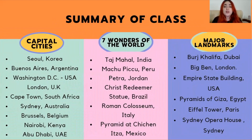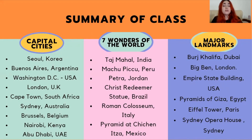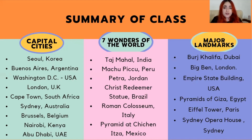Let's do a brief summary of today's lesson. First, we learned about capital cities: Seoul, Buenos Aires, Washington DC, London, Cape Town, Sydney, Brussels, Nairobi, and Abu Dhabi. Then we learned about the seven wonders of the world: the Taj Mahal, Machu Picchu, Petra, the Christ Redeemer statue in Brazil, the Roman Colosseum, and the pyramid at Chichen Itza in Mexico. And lastly, we learned about major landmarks: the Burj Khalifa in Dubai, the Big Ben in London, the Empire State Building in the USA, the Pyramids of Giza in Egypt, the Eiffel Tower in Paris, and the Sydney Opera House in Sydney.